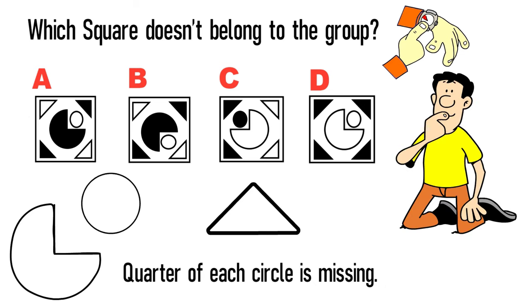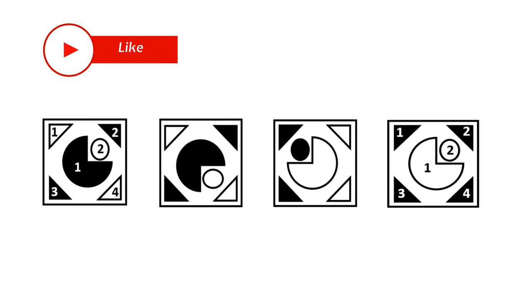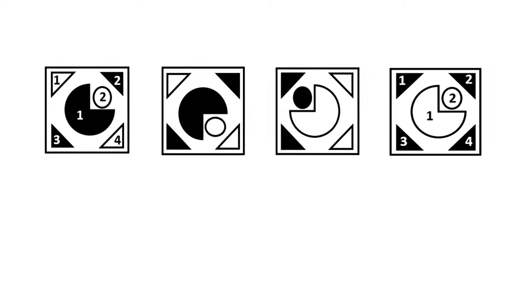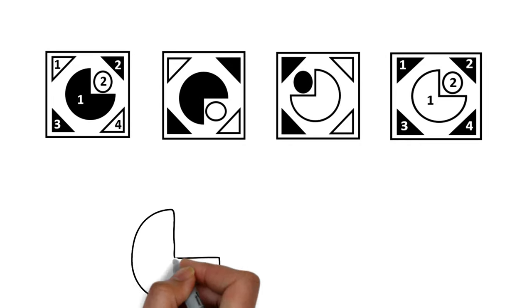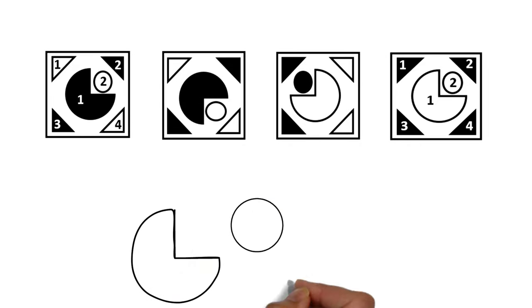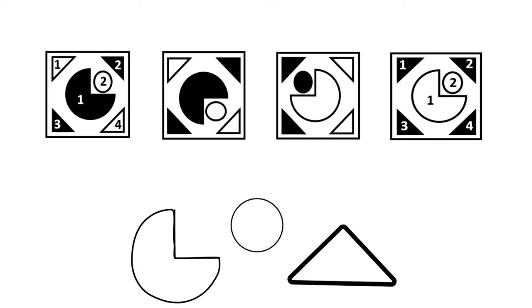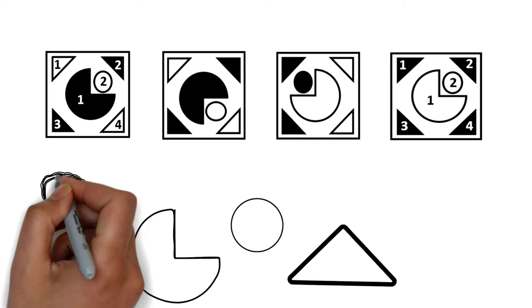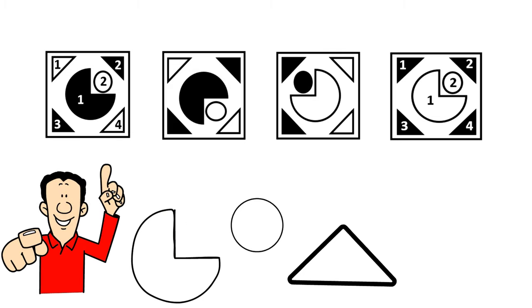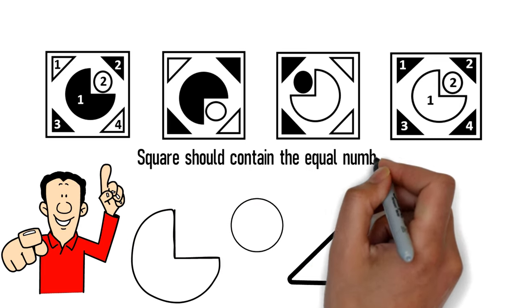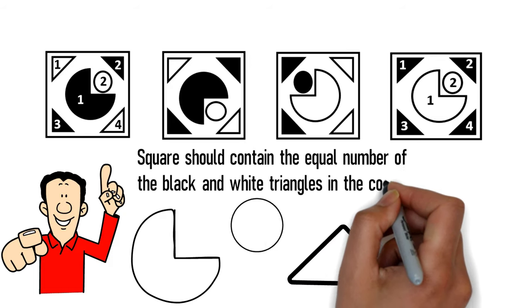The key to solving this challenge is to detect the pattern — this is the skill you need to develop to be successful on the test. Because there are two shapes present in this question — triangles and circles — you should try to detect the pattern among triangles and then among circles. In this particular case, the pattern is that each square should contain an equal number of black and white triangles in the corners.